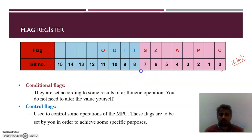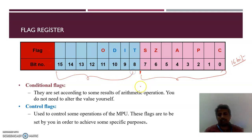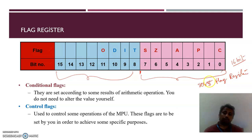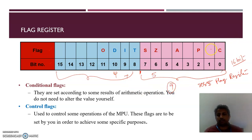From bit number 0 to bit number 7, the lower 8 bits of this flag register are the same as the 8085 flag register — 100 percent the same. In addition to this, 8086 will have 4 additional flags, making a total of 9 defined flags. The remaining bits in the register are not defined and have no meaning to the flag register.